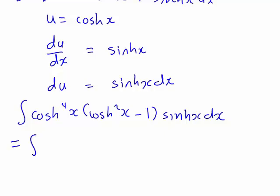Making those substitutions, this first part, cosh⁴(x), is going to become u⁴. This next bit, cosh²(x) minus 1, that will be u² minus 1. As we've said, the sinh(x) dx bit will just become du.